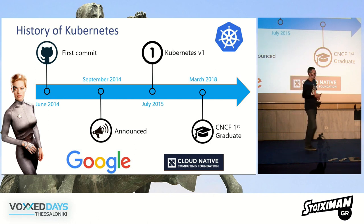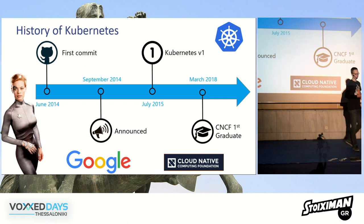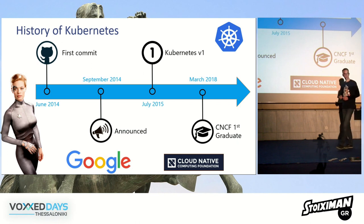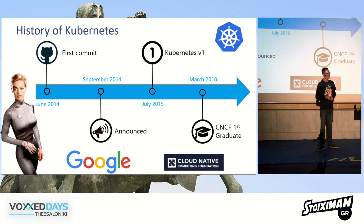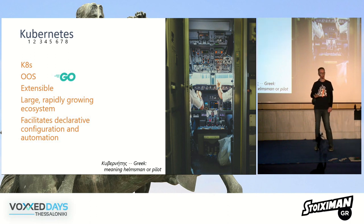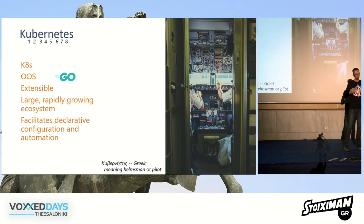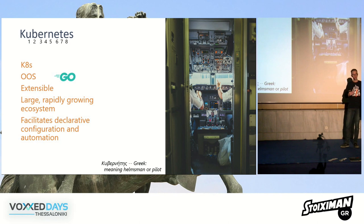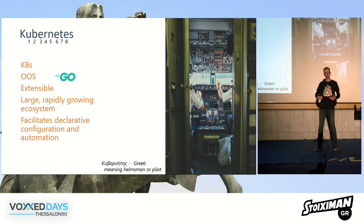Kubernetes is a major project now. Prometheus has also reached graduate status in CNCF. By the way, the 7 spokes in the Kubernetes logo refer to the code name '7 of 9.' You'll often see the abbreviation K8S — the 8 stands for the number of characters between the K and the S. It's an open-source framework written in Go, one of the most active projects on GitHub, and it's known for extensibility. Every component is extensible, making it an enormous ecosystem that's only growing.